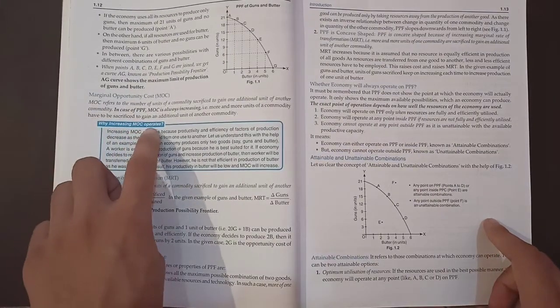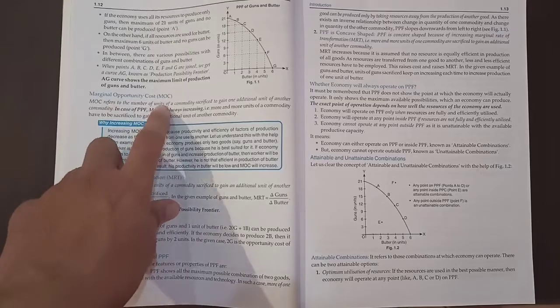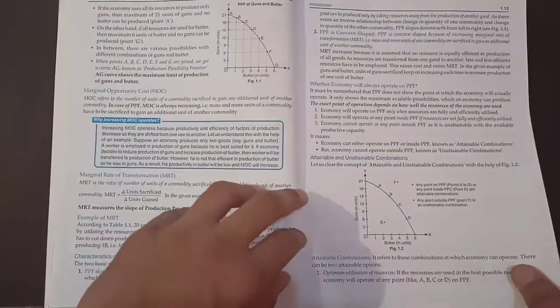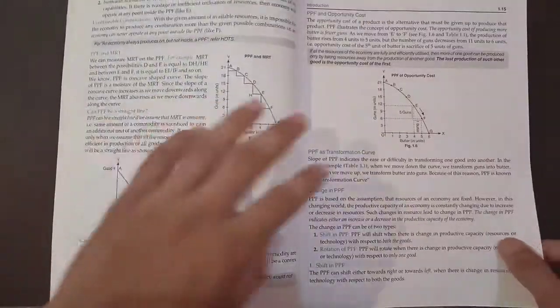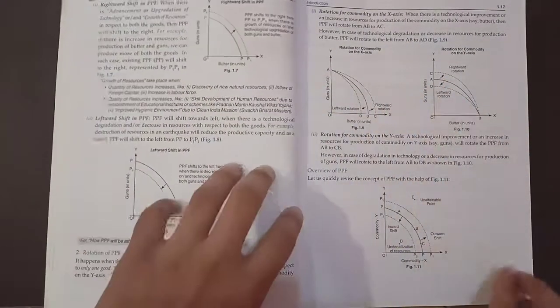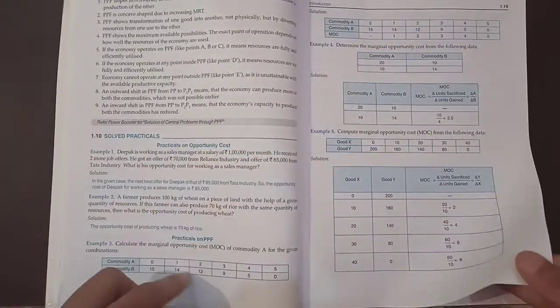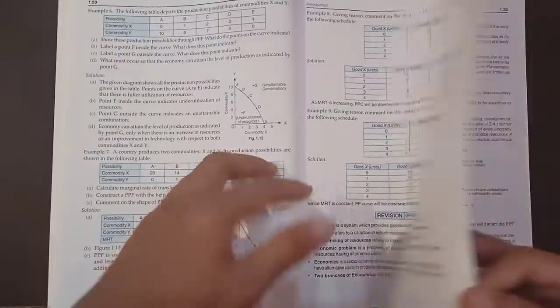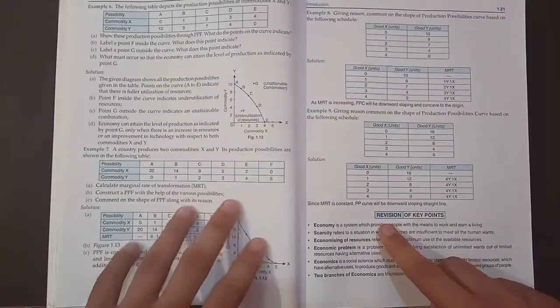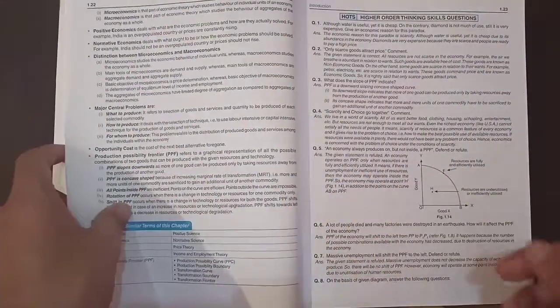Then we have why increasing MOC operates - Marginal Opportunity Cost. So everything is very nicely and deeply explained in this book. Then we have diagrams in this chapter, which are very important in economics. So we have solved practicals, as you can see, then we have unsolved practicals. And lastly, revision of key points for the summary of every topic.